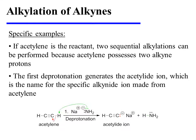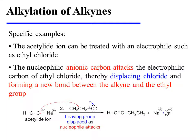If acetylene is the reactant, two sequential alkylations could be performed, if desired, because acetylene possesses two alkyne protons. The first deprotonation generates the acetylide ion, which is the name for the specific alkynide ion made from acetylene. The acetylide ion can then be treated with an electrophile, such as ethyl chloride. The nucleophilic anionic carbon attacks the electrophilic carbon of ethyl chloride, displacing chloride, resulting in a new carbon-carbon bond between the alkyne and ethyl group.